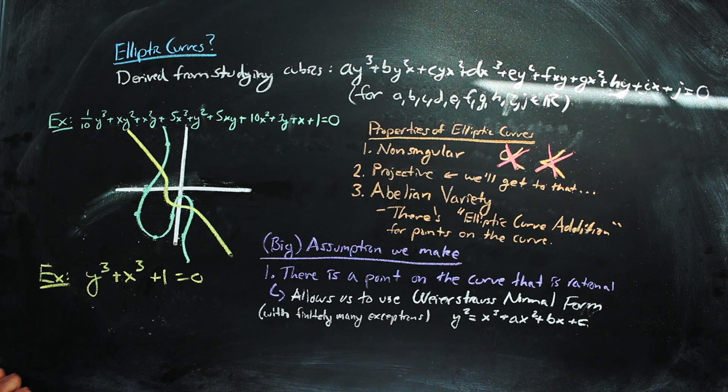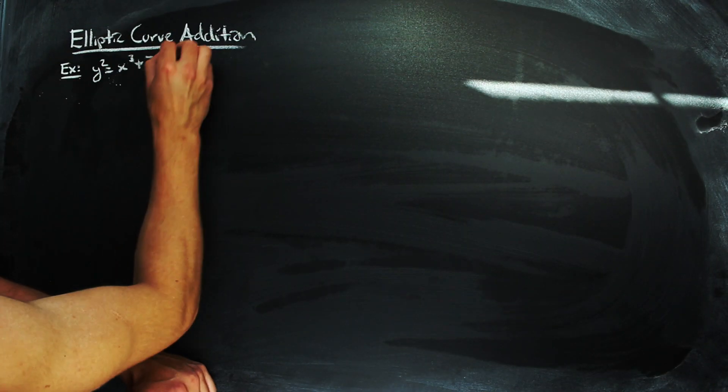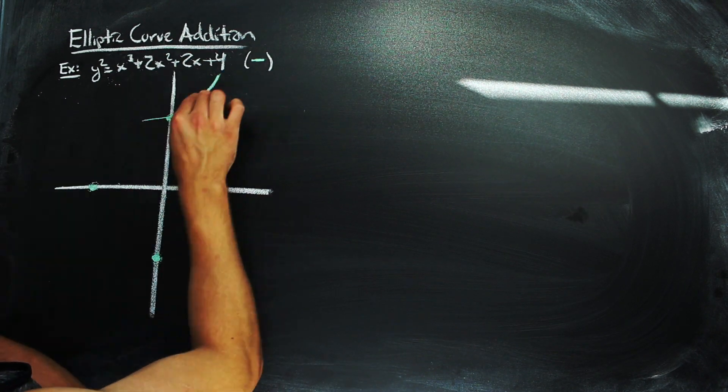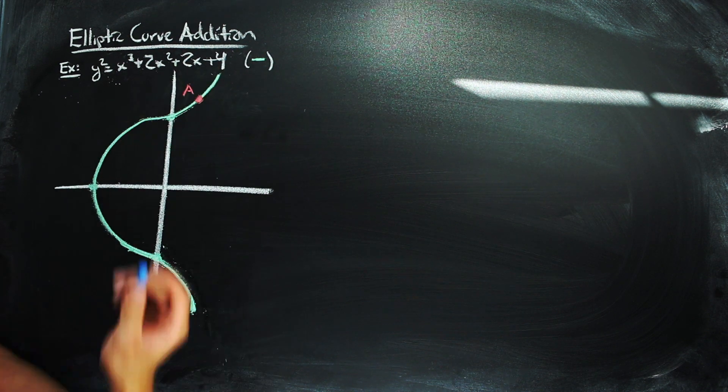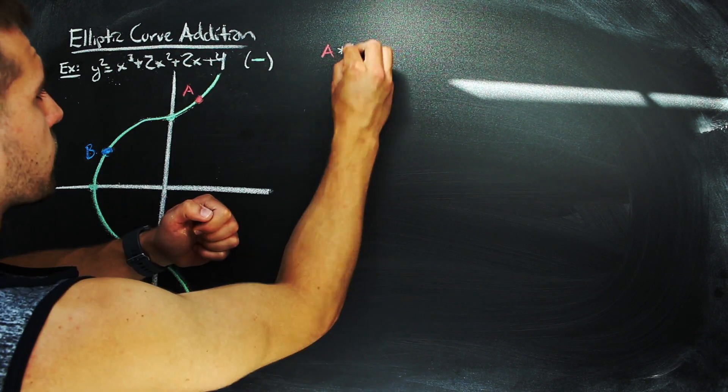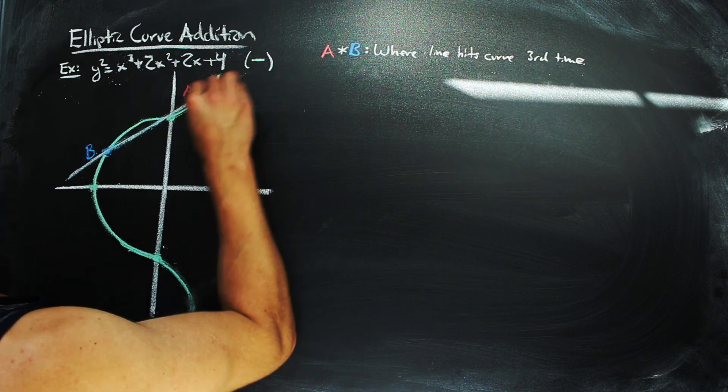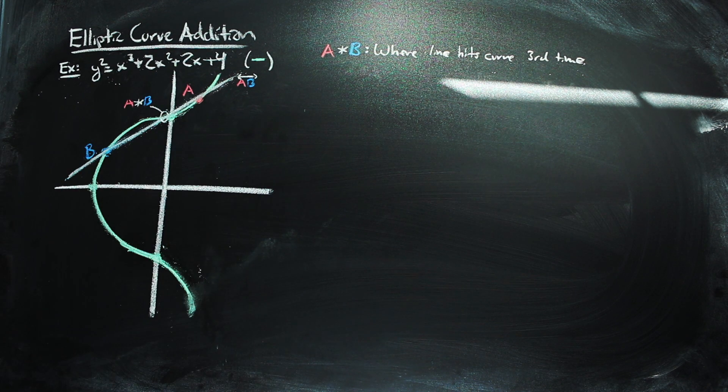And there are finitely many exceptions to our ability to do this for a curve that has a rational point. So moving on, to illustrate addition, let's go ahead and look at an example curve. Take y squared equals x cubed plus 2x squared plus 2x plus 4, which looks something like this, and pick two points on the curve. Call them a and b. The composition of these points, a star b, which is not the addition, is the point where the line between them hits the curve a third time.